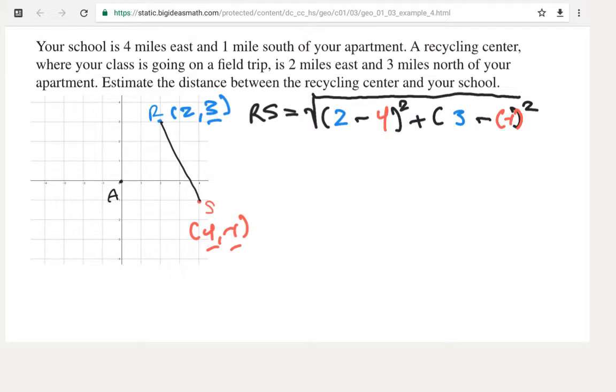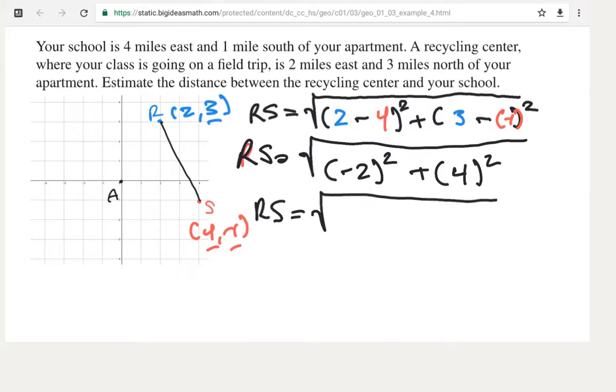Alright, so I'm going to copy down to the next line. RS equals, put my big square root bracket. So first thing I'm going to do is actually do the math here. 2 minus 4 is negative 2. And over here, 3 minus negative 1 is like 3 plus 1. That's 4. Now we're going down to another line here.